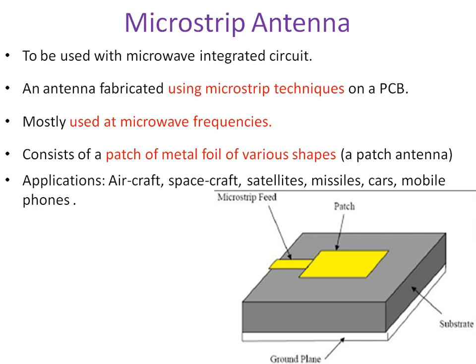This antenna has been fabricated using microstrip techniques on a PCB. They are mostly used at microwave frequencies and mostly have a rectangular shape. Applications of this antenna: they are widely used in aircraft applications, spacecraft applications, satellites, missiles, cars, and mobiles.